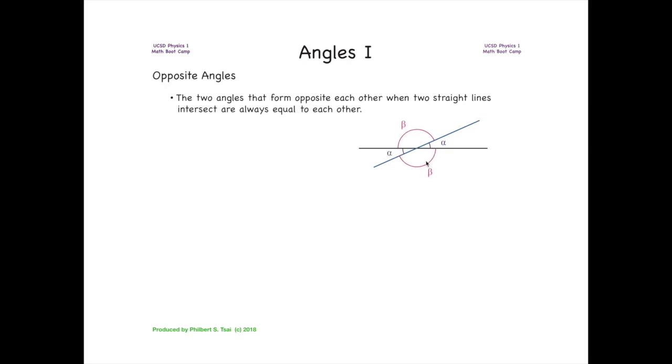There are actually two sets of opposing angles formed whenever you intersect two straight lines, and so this angle here is automatically equal to that angle.